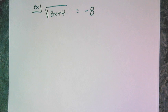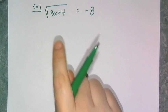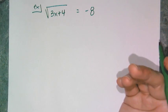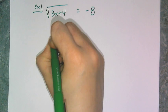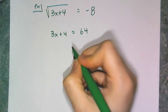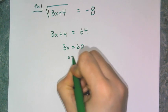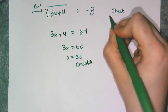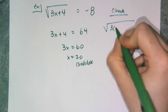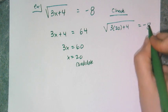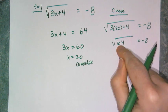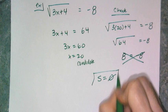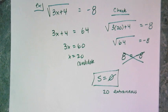Square root equations can be tricky because you have to understand the notation. In this next example, if you just go through the process of squaring both sides, you get 3x plus 4 equals 64. Solving: 3x equals 60, so x equals 20 — that's the candidate. Checking: the square root of 3 times 20 plus 4 equals the square root of 64, which is 8, not negative 8. So x equals 20 does not work — my solution is that there isn't one, and 20 is extraneous.